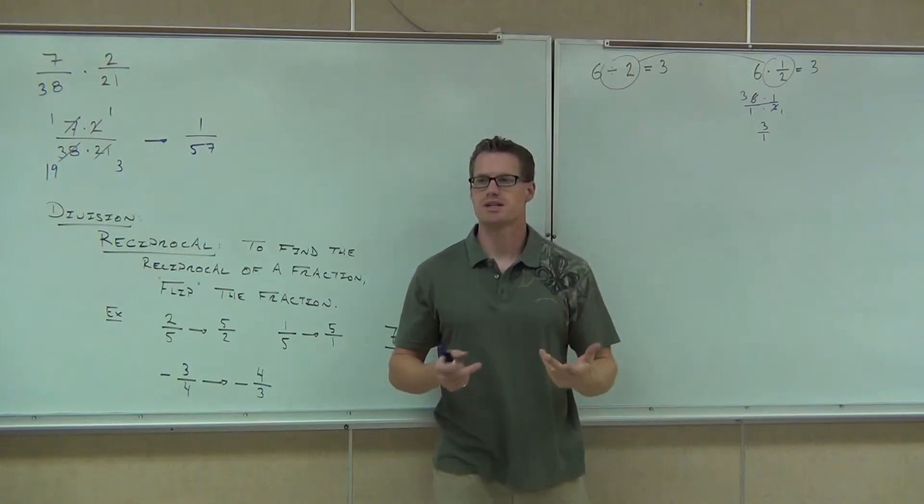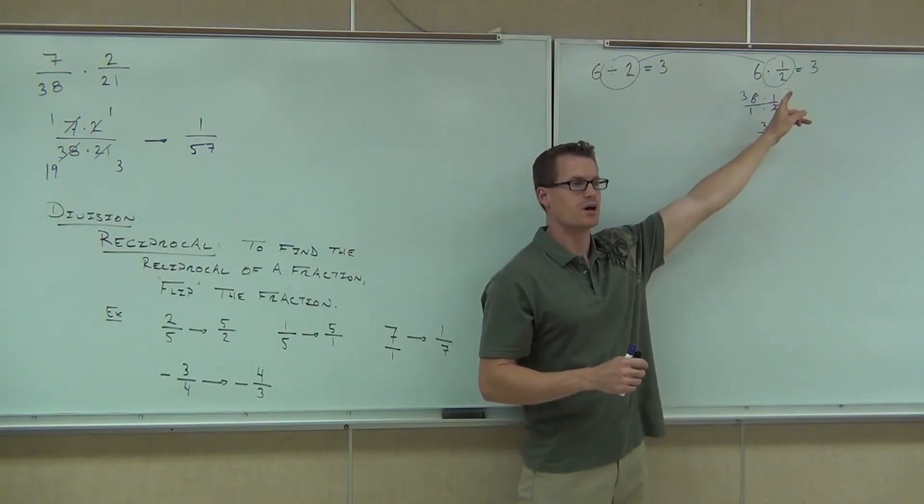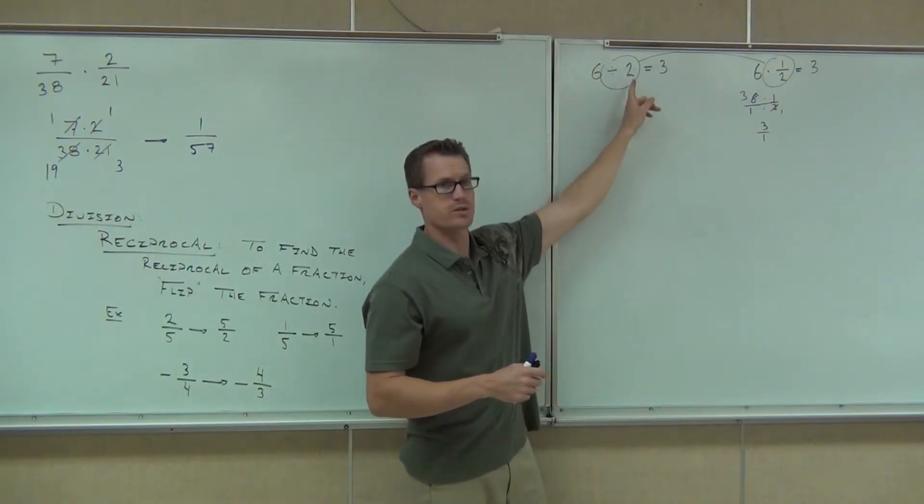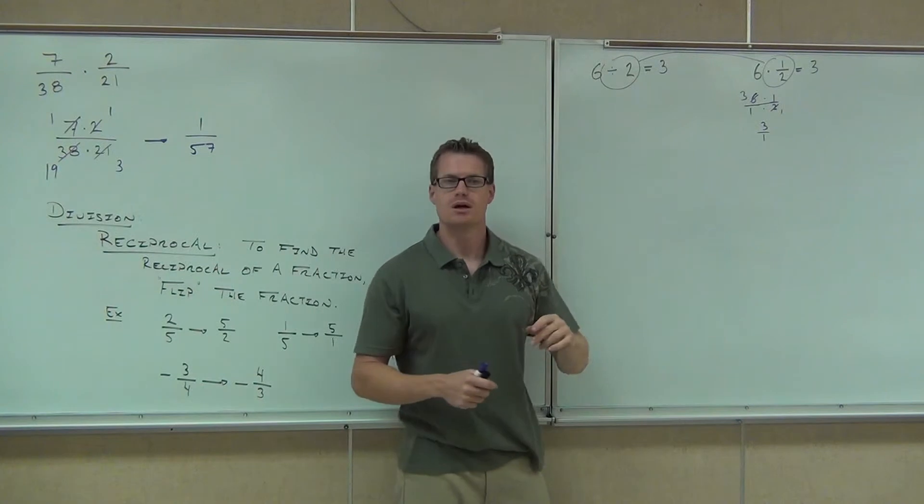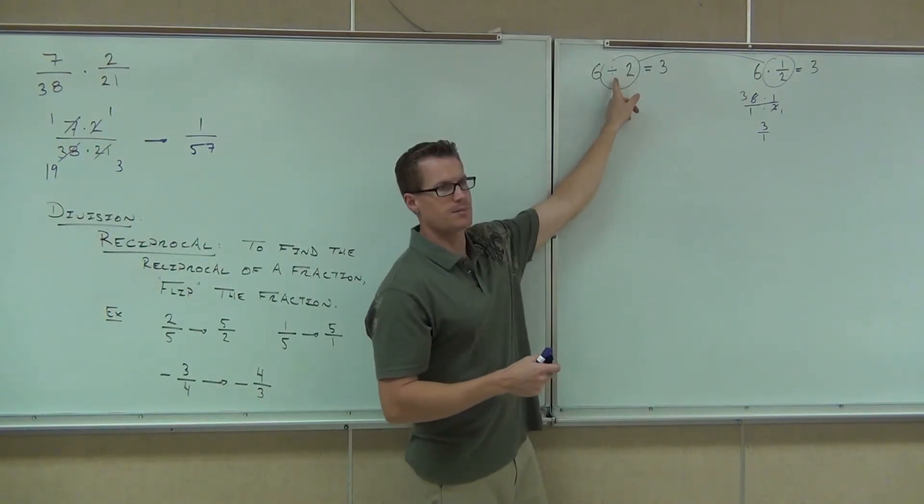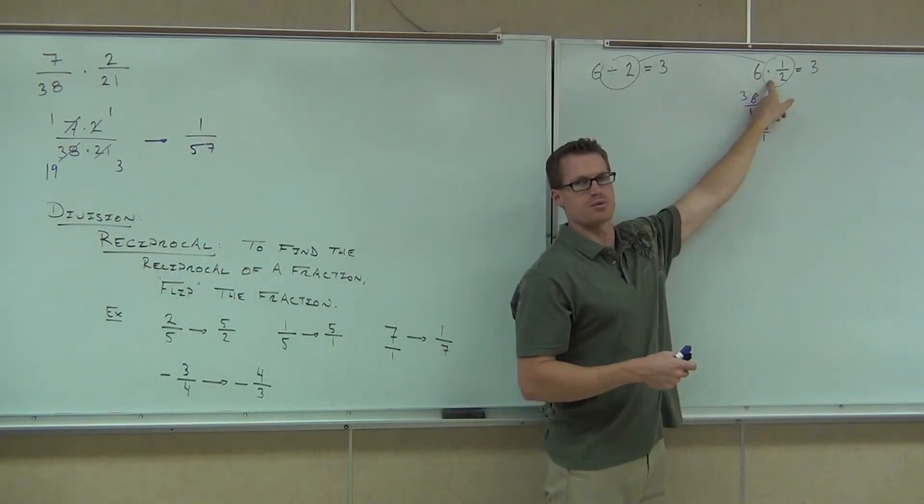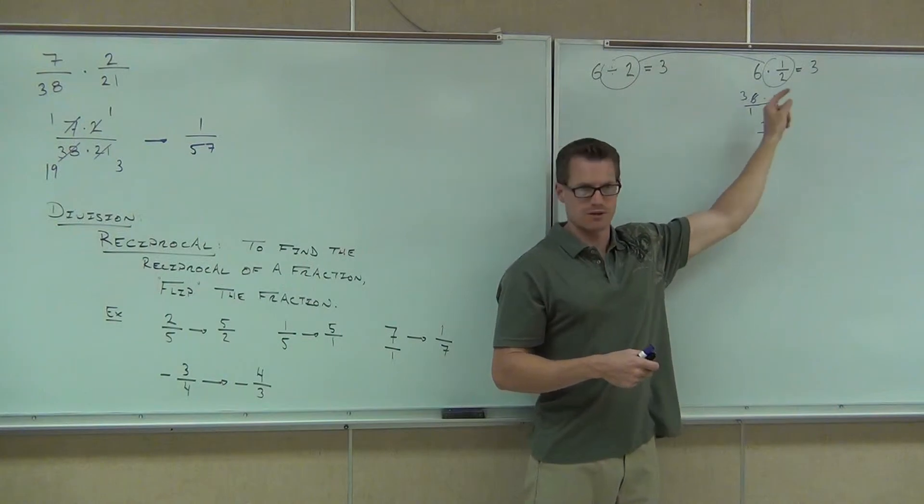Here's what this says. It says instead of actually, now this way probably seems harder to us because we're using a fraction, but keep in mind that I'm not always going to have a whole number here. I might have a fraction. This is what this says. It says instead of dividing by a number, I can actually multiply by the reciprocal of that number, and it will give me the same answer.